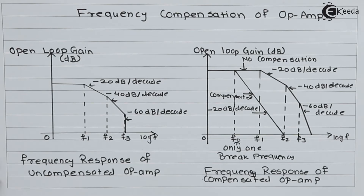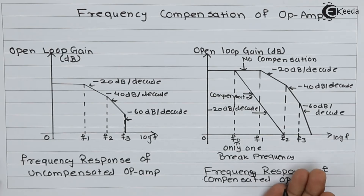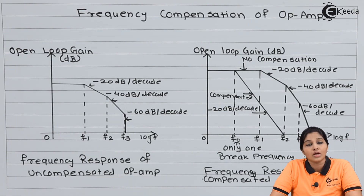If we compare the two diagrams, we will come to know that the bandwidth of uncompensated op-amp is more as compared to the bandwidth of compensated op-amp. But compensated op-amps are more stable in operation as compared to uncompensated op-amps. So this is what frequency compensation in case of op-amp is about.